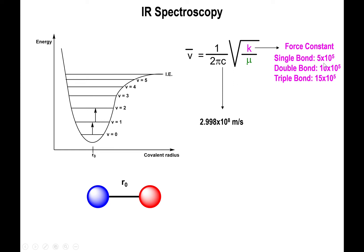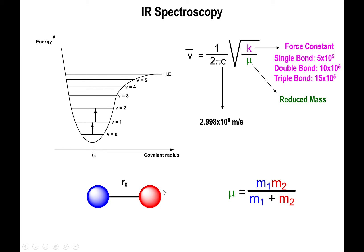Generally speaking, single bonds are weaker than double bonds, which are weaker than triple bonds. You have a value of 5 times 10 to the fifth for single bonds, twice as much for double bonds, and three times as much for triple bonds — roughly representing the strength of single, double, and triple bonds, respectively. And then mu is the reduced mass. The reduced mass equation is the mass of atom one times the mass of atom two, divided by the sum of the masses of both atoms together.